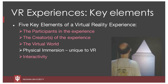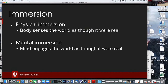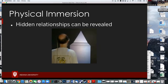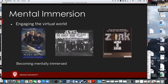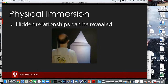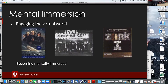In physical immersion, the body senses the virtual world as though it were the physical world. Mental immersion engages the mind with the world as though events were real. We can see the hidden relationships through physical immersion. To be mentally immersed does not require VR. A novel, a motion picture, and an old-style computer game all have virtual worlds and all let you become mentally immersed.